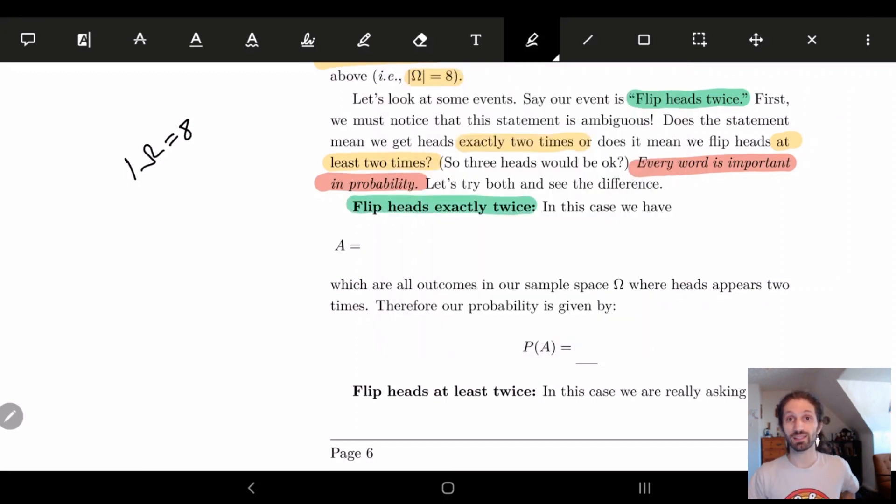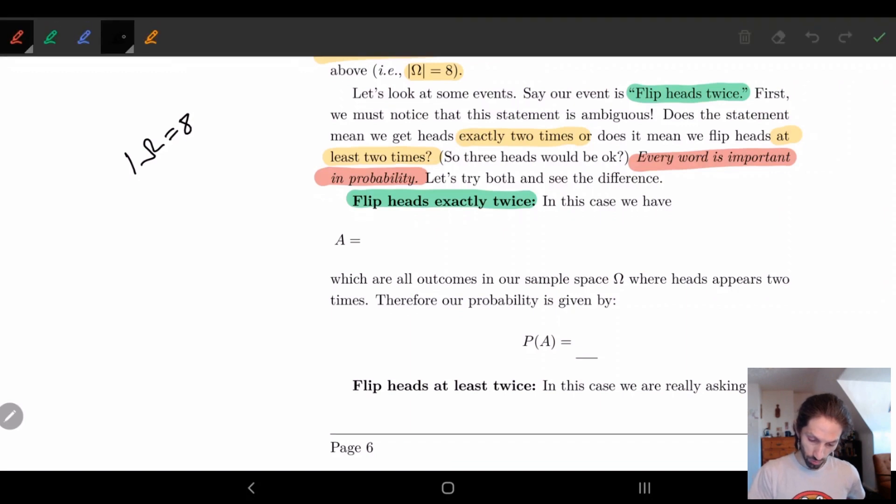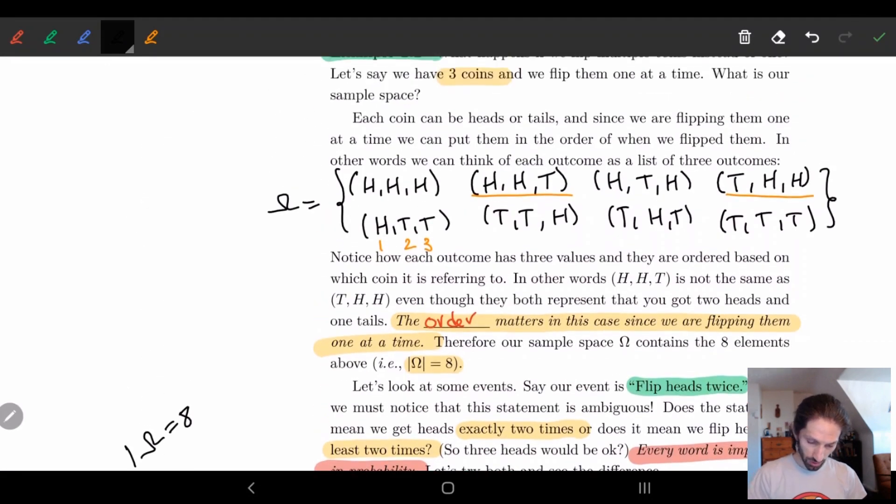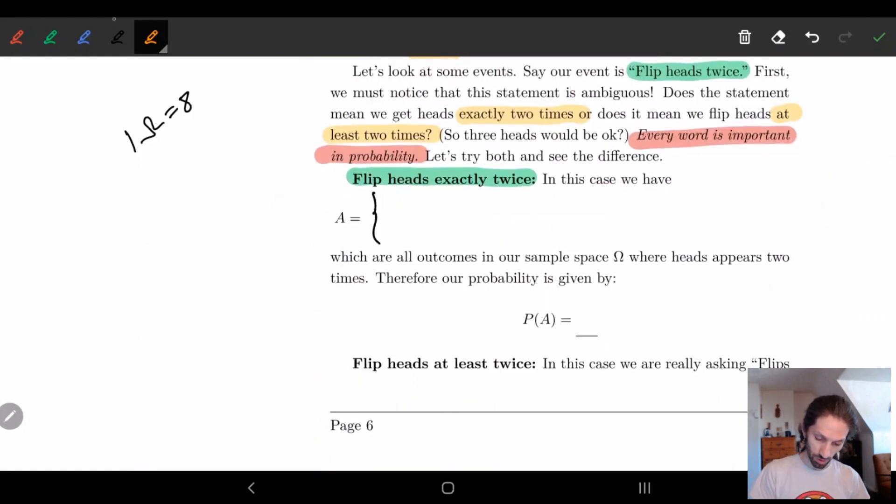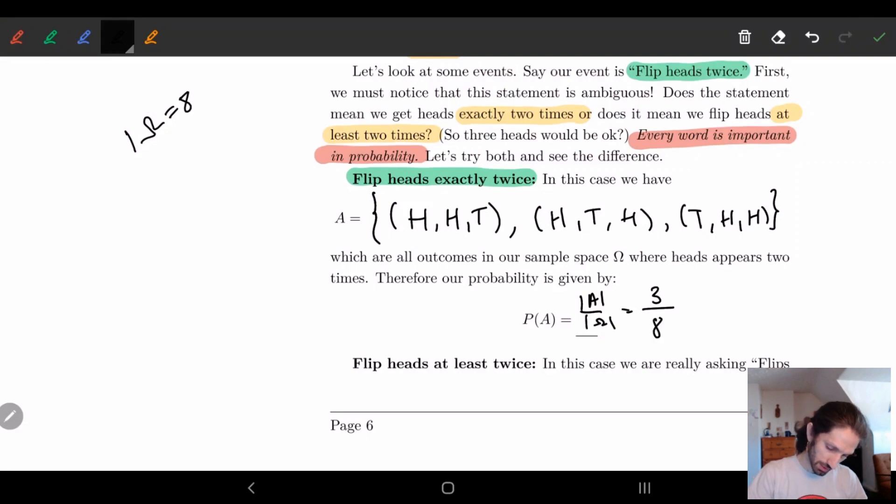So let's look at our events. The first example we'll look at is flip heads exactly twice. This should be easy at this point. We're going to look at all of our sets from before and look at which one's flipping heads exactly twice. You'll notice it's just these three that I have underlined in the beginning. They have exactly two heads. So our event is just these three elements: tails in the last spot, tails in the second spot, and tails in the first spot. At this point we should be pros at doing probabilities. We see A equals three, has three elements. Omega is equal to eight. So we have three eighths probability.